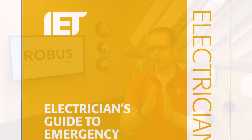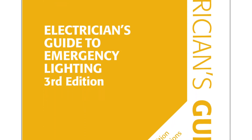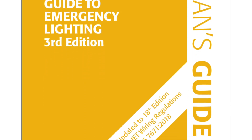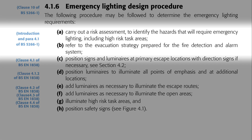Rather than diving straight into escape route illumination, the Electrician's Guide to Emergency Lighting suggests a different approach to emergency lighting design. Under subheading 4.1.6 we should follow this procedure: A — carry out a risk assessment to identify hazards that will require emergency lighting, including high risk task areas; B — refer to the evacuation strategy prepared for the fire detection and alarm system. More on risk assessments in a future video, but do make sure you understand the evacuation strategy properly.